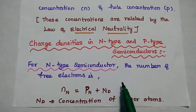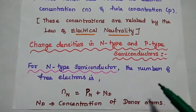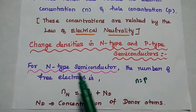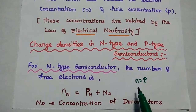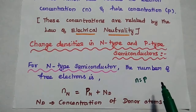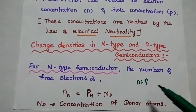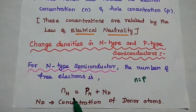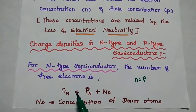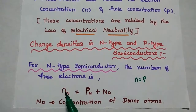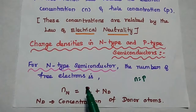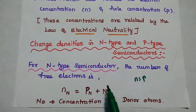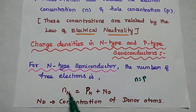In the pure semiconductor, the number of electrons is equal to number of holes. But in case of n-type semiconductor, the number of electrons can be increased by adding donor atoms. So here we can denote the number of free electrons as n with suffix capital N, where capital N represents n-type semiconductor. So here n is equal to p-n, that is the number of holes present in the intrinsic semiconductor. After adding donor atoms, we can increase the electrons.